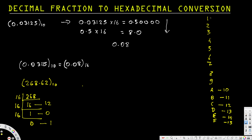We have the remainders 1, 0, 12. Since 12 is more than 9, we replace it with the letter C. Reading from bottom to top, this gives us 1, 0, C — so 10C is the hexadecimal conversion for the integer part 268.